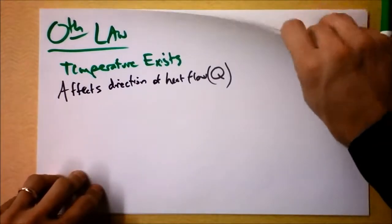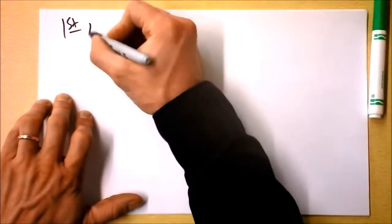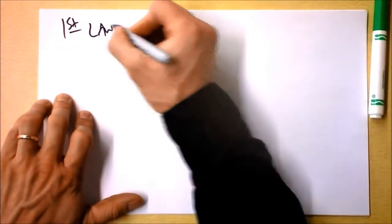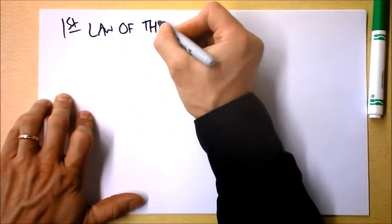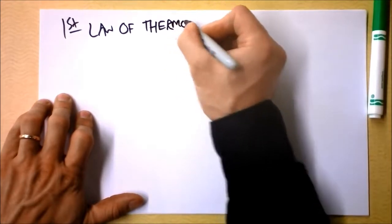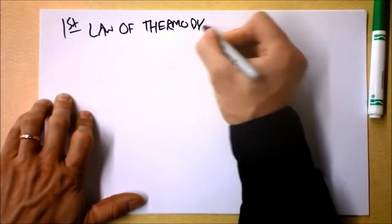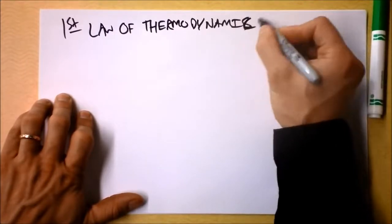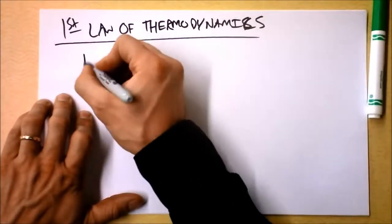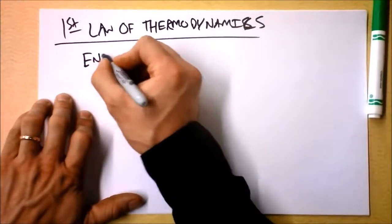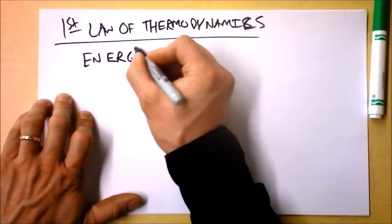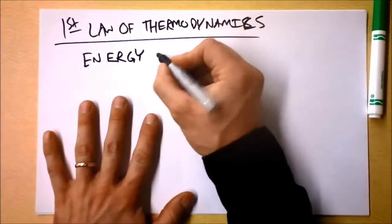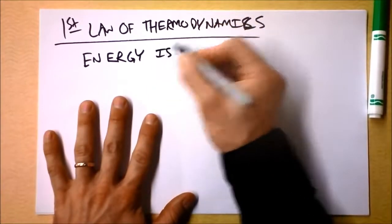The first law of thermodynamics is this. That's a C, that's an S — energy is conserved. Look at these laws: temperature exists, energy is conserved.